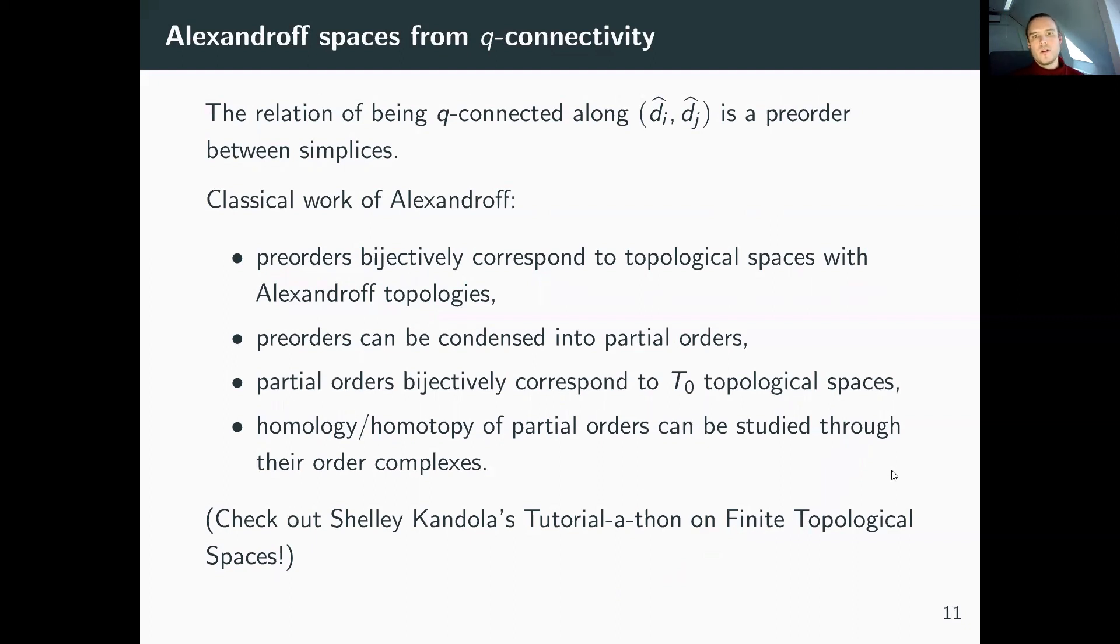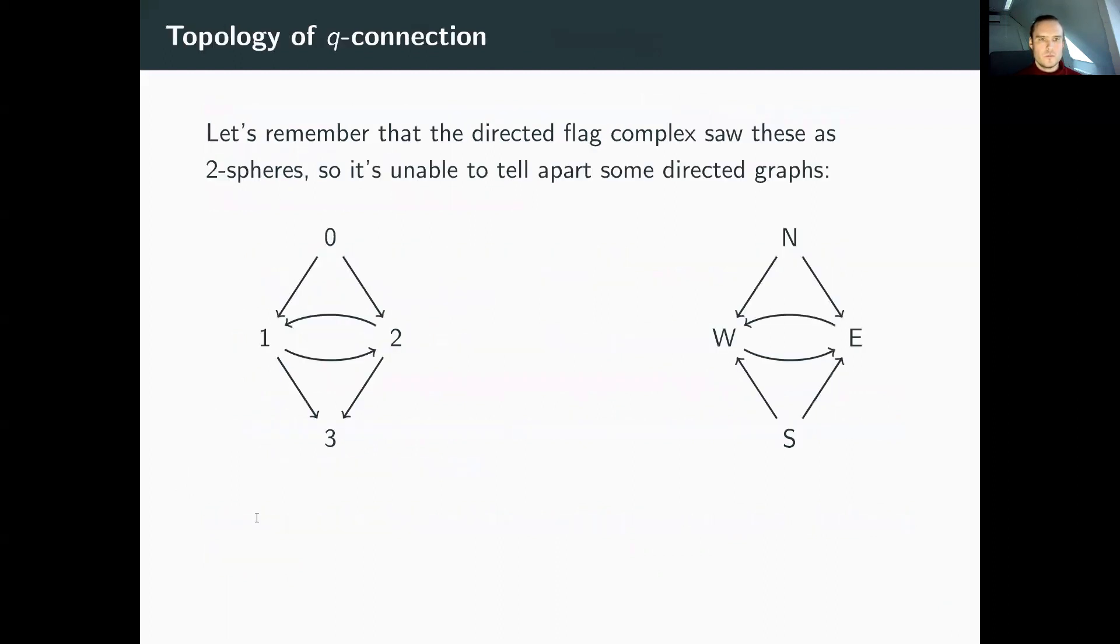This relation of being q-connected along these directions is a pre-order between simplices. There's classical work of Alexandrov showing that pre-orders bijectively correspond to topological spaces with Alexandrov topologies. Pre-orders can be condensed into partial orders, which bijectively correspond to T0 topological spaces. The homology or homotopy type of partial orders can be studied through their order complexes. If you want to know more, I suggest looking at Shelley Kandola's tutorial on finite topological spaces.